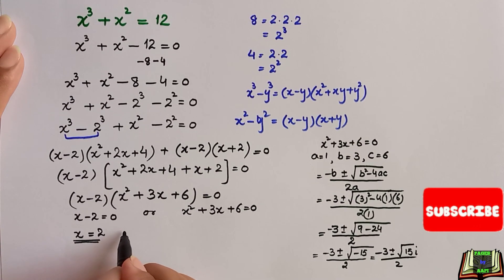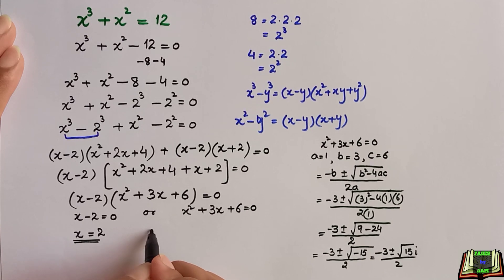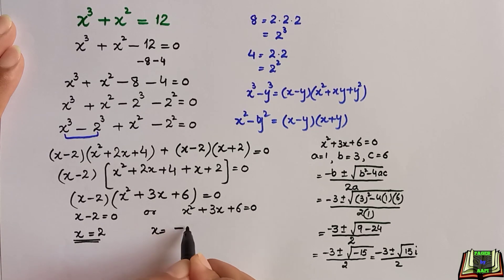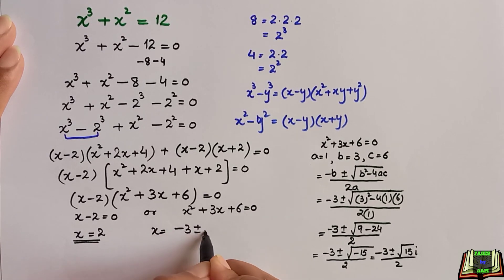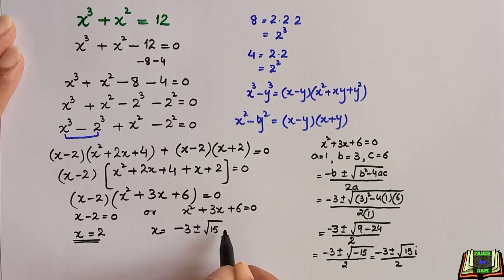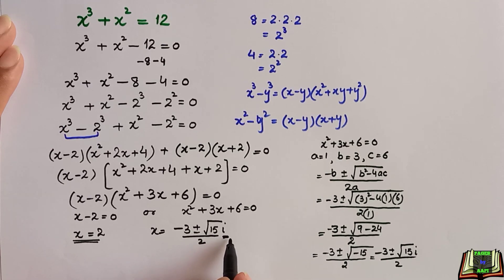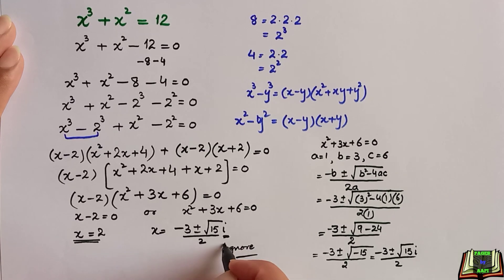This means we got the two roots from this equation: x equals minus 3 plus minus root of 15 iota over 2. As iota is an imaginary number, we are going to ignore this solution, and x equals 2 is a real number, so this is the correct answer.